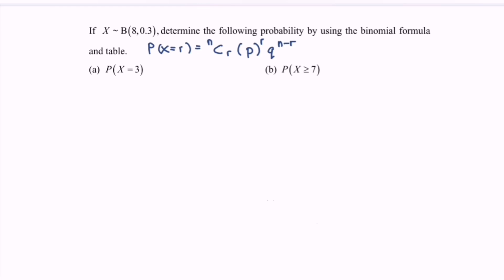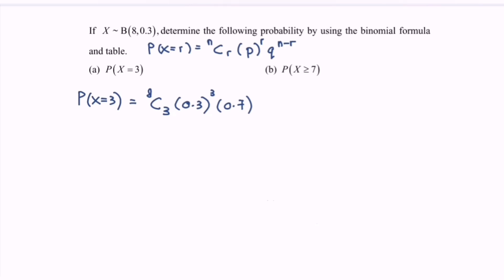For question a, we find the probability that X equals 3. Using the binomial formula: P(X=3) = 8C3 × (0.3)^3 × (0.7)^5. By calculator, this gives 0.25412184, which rounds to 0.2541.